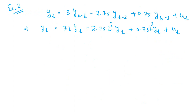The second example is slightly more complex. yt equals 3 times yt minus 1, minus 2.75 times yt minus 2, plus 0.75 times yt minus 3, plus ut. Unlike the previous case, we have explicit coefficients here: 3, minus 2.75, and 0.75.